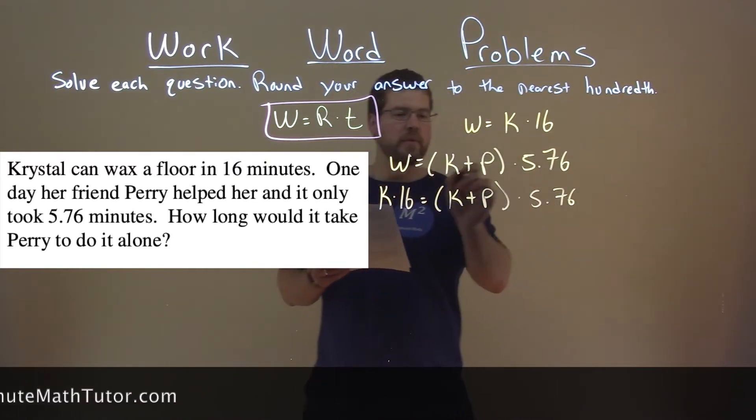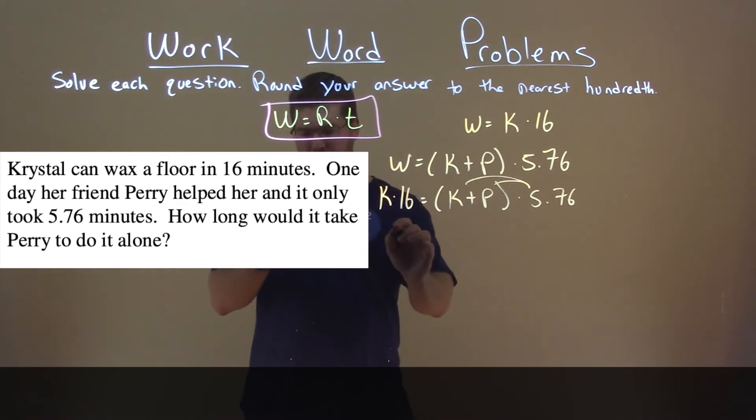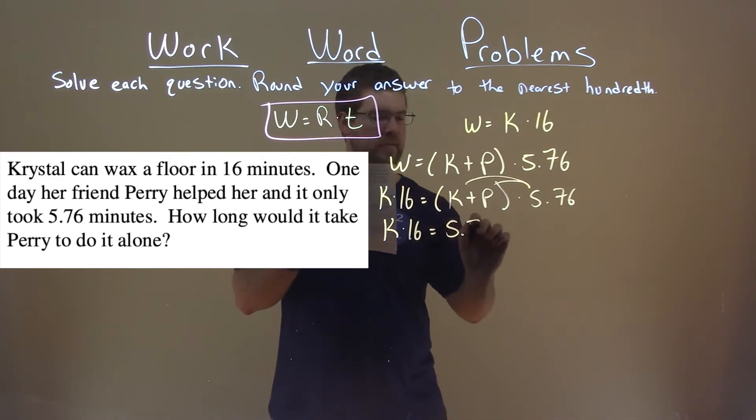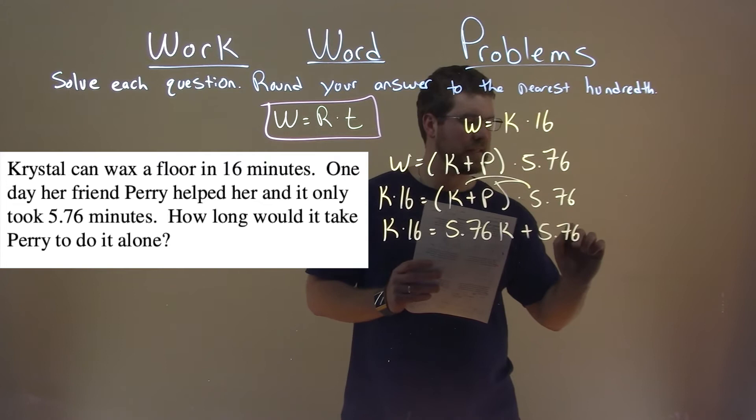We can distribute that 5.76 to both parts here. And we have k times 16 equals 5.76k plus 5.76p.